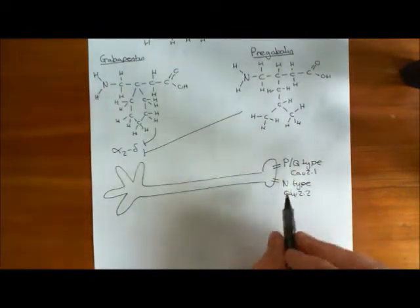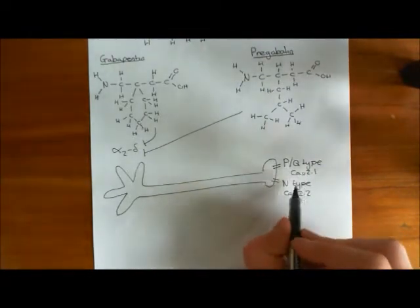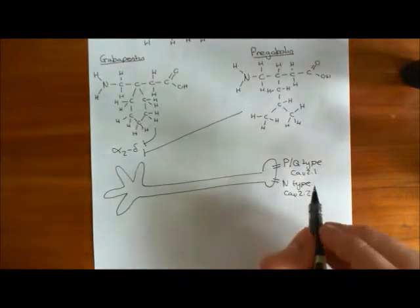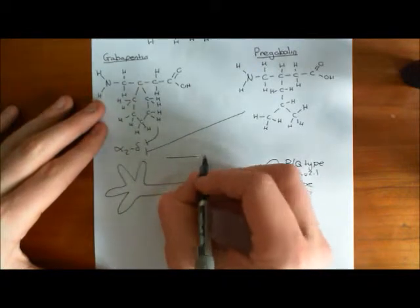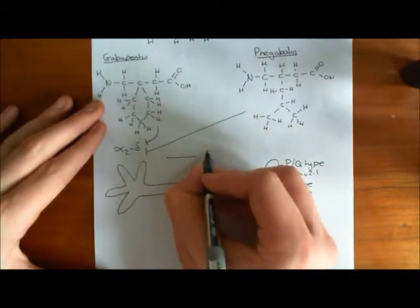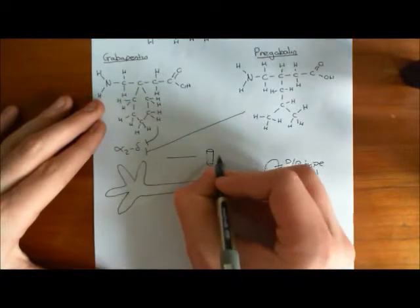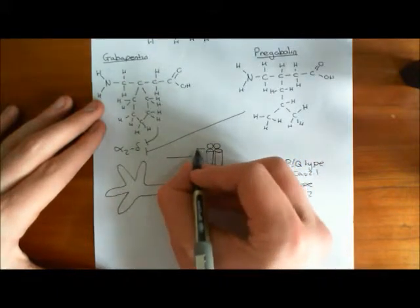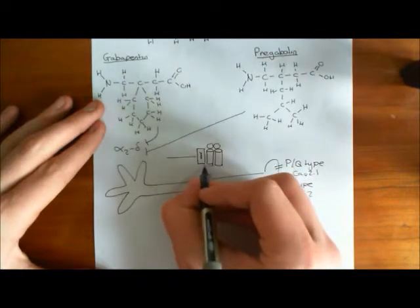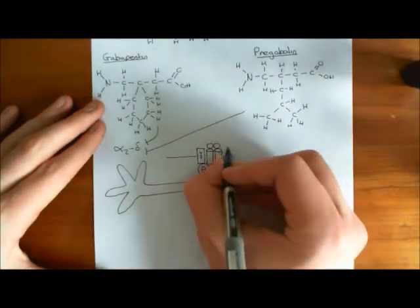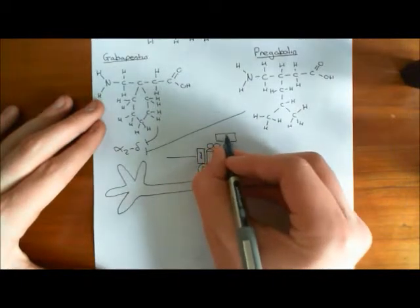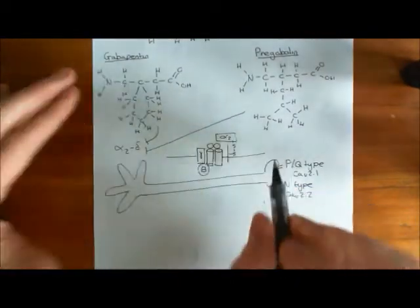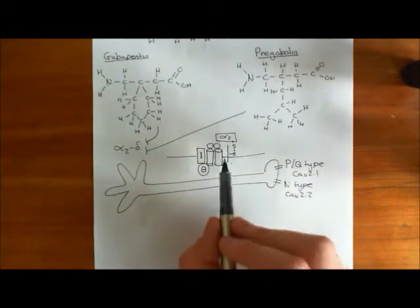And in both of these cases, these names here, the PQ type and the N type, that tells you what the alpha-1 subunit of the voltage-gated calcium channel is. So remember, if we just revise again the structure of the voltage-gated calcium channel, the main subunit is this alpha-1 subunit, which is the subunit which actually allows the calcium to move across the membrane. So it has these four domains which make a pore in the middle. But you also have auxiliary subunits, for instance, the gamma subunit, the beta subunit, and the alpha-2-delta subunit. Here's the delta bit, and here's the alpha-2 bit, linked by a disulfide bond. So that's the overall structure of the voltage-gated calcium channel.